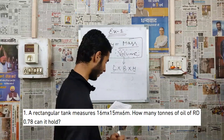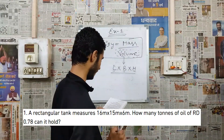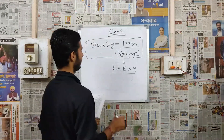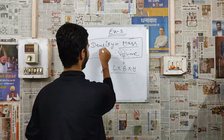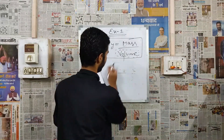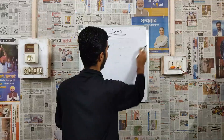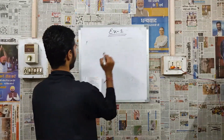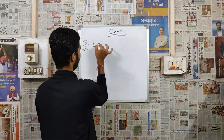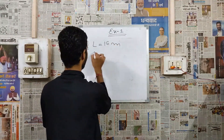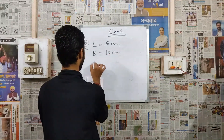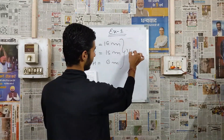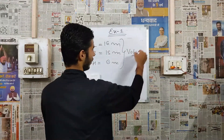Question 1: A rectangular tank measures 16 m × 15 m × 6 m. How many tons of oil of relative density 0.78 can it hold? We have to find the mass. We know length is 16 m, breadth is 15 m, and height is 6 m. By this, we will find the volume.